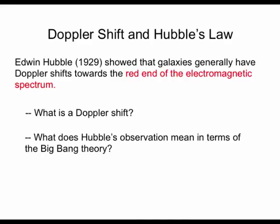One of the most important discoveries of 20th century astronomy was made in the 1920s by Edwin Hubble, for whom the Hubble Space Telescope was named. Using astronomical observations, he showed that galaxies generally have Doppler shifts towards the red end of the electromagnetic spectrum. So what does that mean? What is a Doppler shift and what does it have to do with the Big Bang theory?